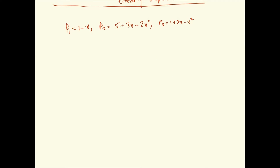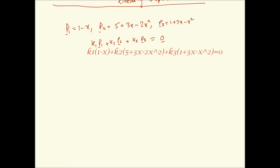Let's look at a different example: we have three polynomials in P2 and we want to see if they form a linearly independent set. We start by setting up the equation K1·P1 + K2·P2 + K3·P3 = 0, where the zero vector in this space is the number zero. That is our equation for testing linear independence.